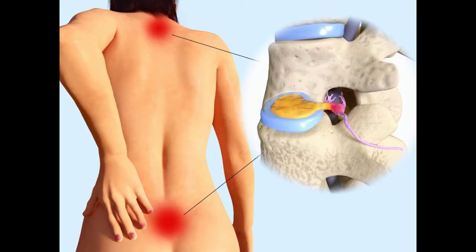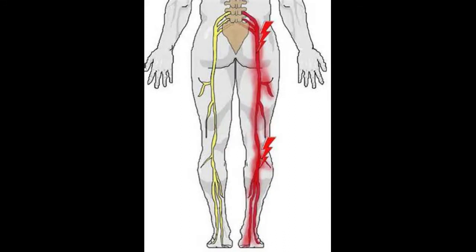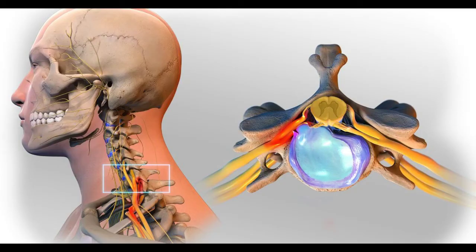Most herniated discs occur in your lower back or lumbar spine, although they can occur in your neck — the cervical spine. If your herniated disc is in your lower back, you'll typically feel the most intense pain in your buttocks, thigh, and calf, and it may also involve part of the foot. If your herniated disc is in your neck, the pain will typically be most intense in the shoulder and arm, and may shoot into your arm or leg when you cough, sneeze, or move your spine into certain positions.